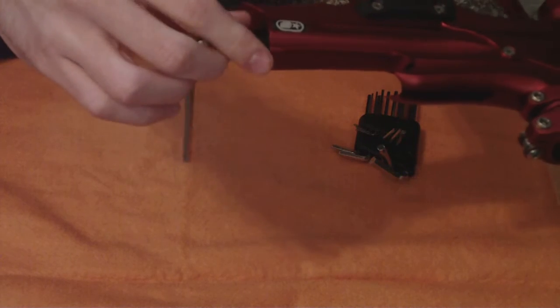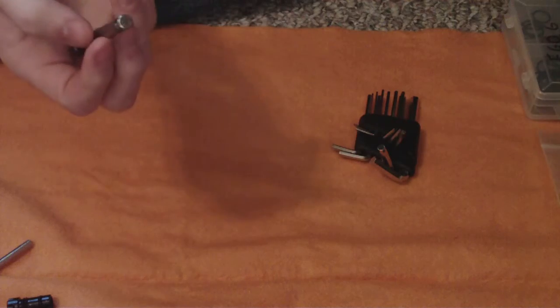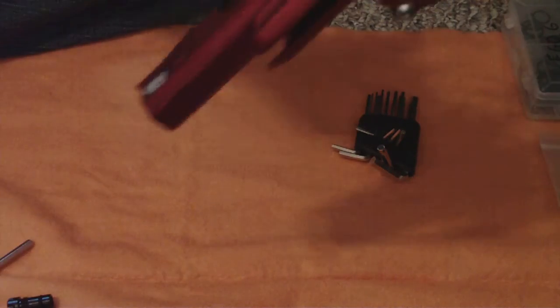Just unscrew this back cap, pull that out. Then your rammer should come straight out, like such. Now this is pretty much as far as you need to go, unless you need to change your battery.